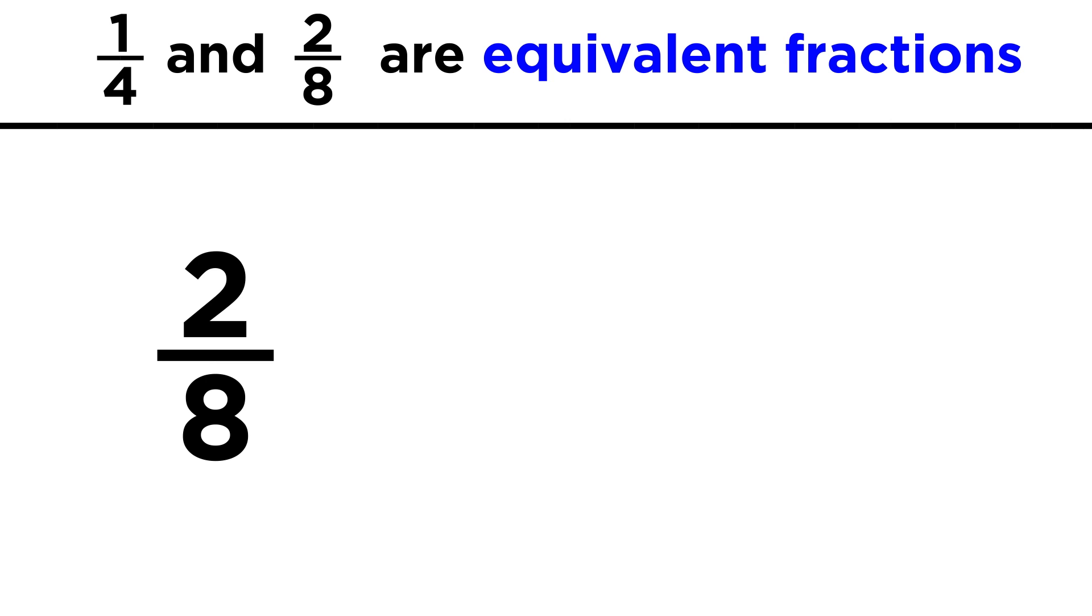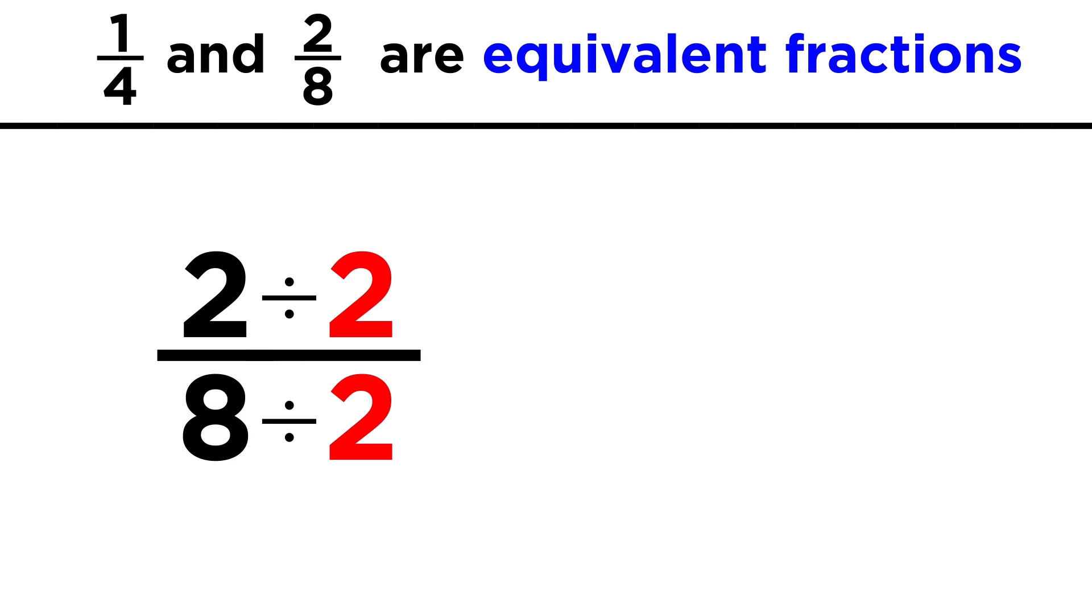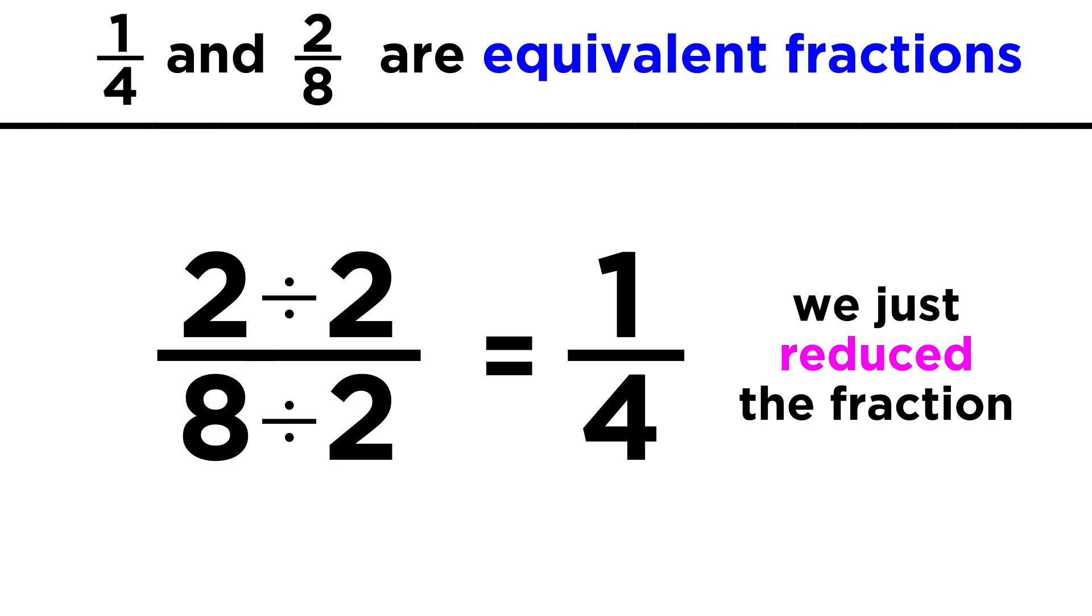When we have a fraction like this, we can manipulate it any way we want by simply doing the same thing to both the top, or numerator, and the bottom, or denominator. If we divide both the two and the eight by two, we get one fourth, which again means that these fractions must be equivalent.